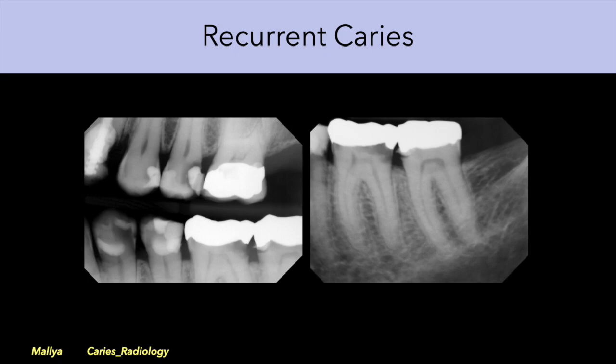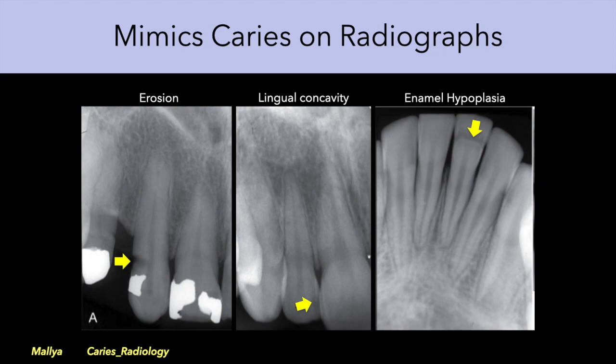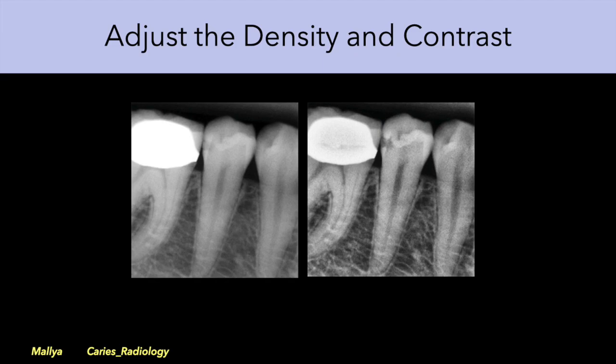Radiographs play an important role in assessing recurrent caries that occurs below restorations. Most dental restorative material is radiopaque, which allows us to detect the radiolucent caries that occurs under the restoration. Also remember that the radiographic appearances of erosion, a lingual concavity, or enamel hyperplasia can mimic caries. Remember that in almost all digital imaging programs you can manually adjust the density and contrast, which is extremely helpful to appreciate the changes caused by caries.